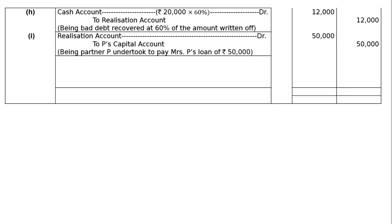Part I: partner P undertook to pay Mrs. P's loan of Rs.50,000. Realization account is debited to P's capital account Rs.50,000, being partner P undertook to pay Mrs. P's loan. Mrs. P's loan must be appearing on the credit side of Realization account, and taking it over is recorded on the debit side.